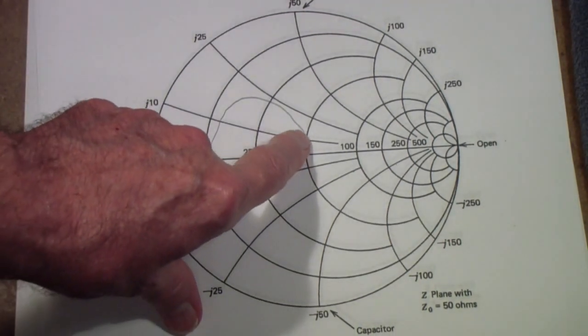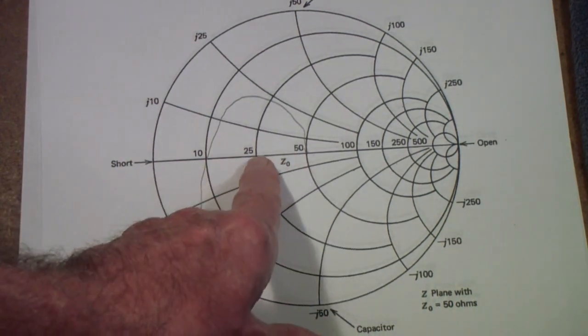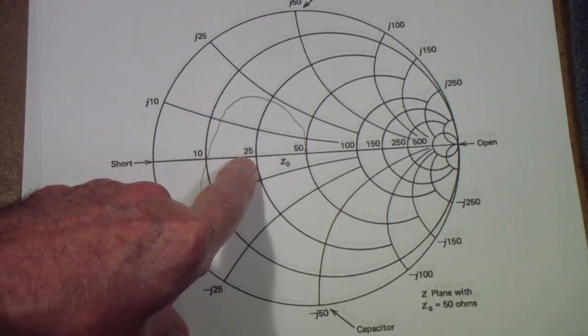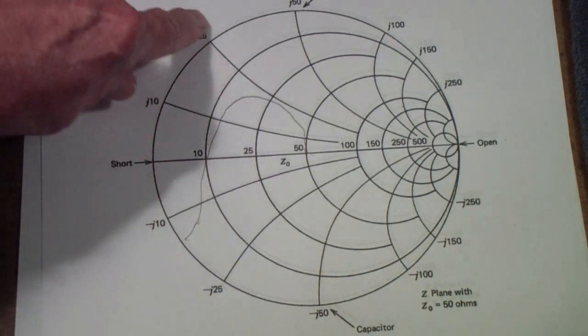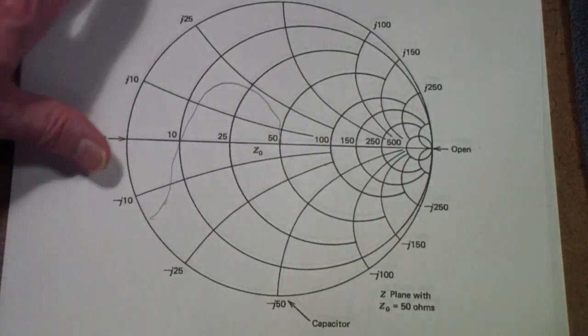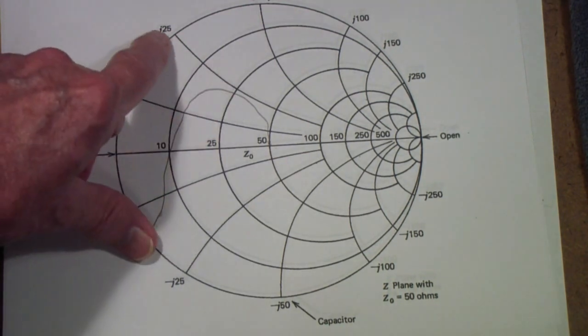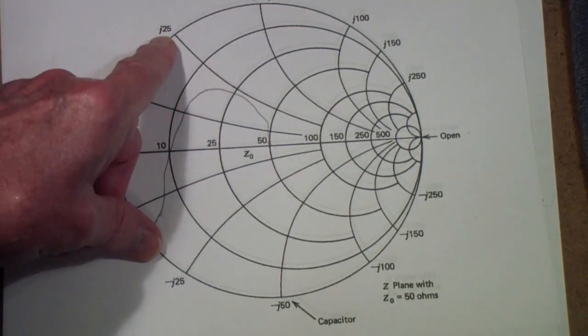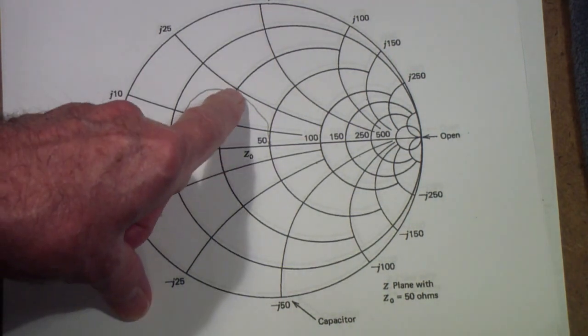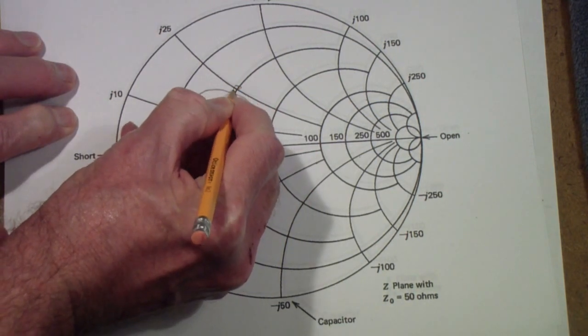In other words, every single point on this line has a resistance. In this case, that's 25 ohms. And a J value or an impedance that is, in this case, very close to J25, that's plus J25. So, if it's 25 ohms resistance and 25 ohms of reactance, it would be this spot.